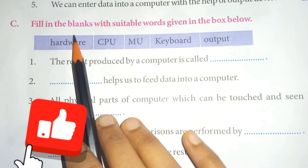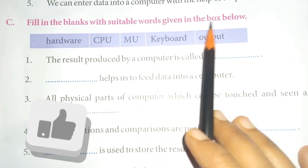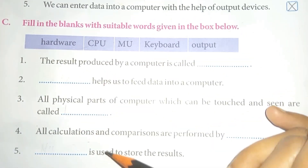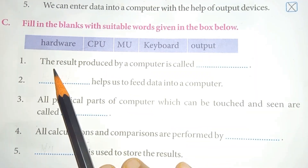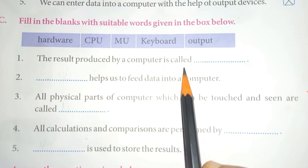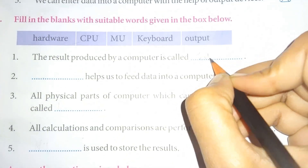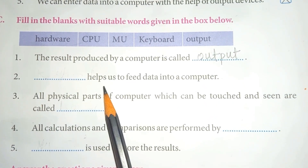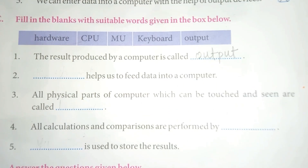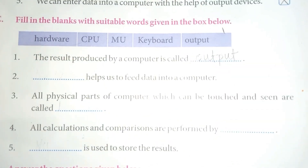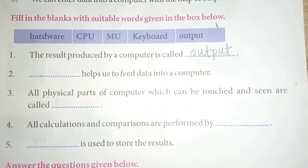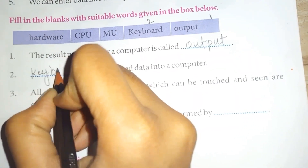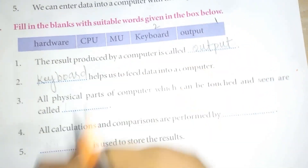Question number C. Fill in the blanks with the suitable words given in the box below. The result produced by a computer is called output. Blank helps us to feed data into a computer — we enter data through the keyboard. Keyboard.